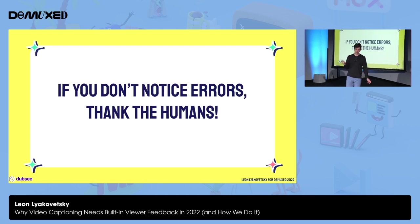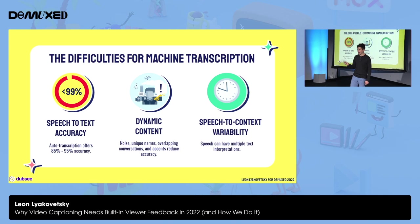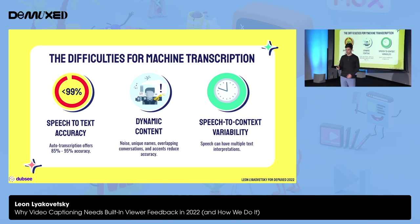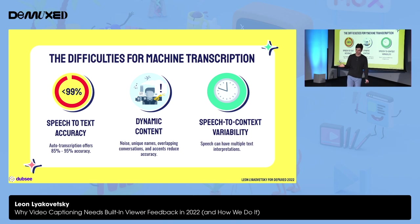If you're watching a video for longer than a minute and you haven't noticed any errors, you can thank the humans on that one. Captioning is just a difficult task. The first major hurdle is speech-to-text accuracy, which for auto-generated transcriptions is between 85 to 95%. It's impressive, but it's not the 99% we need for accessibility compliance, or to not notice any errors as we're watching a video.